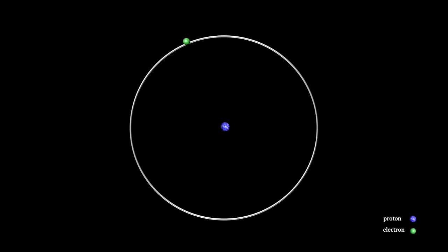The first proposed solution was to assume that the electron is in orbit around the nucleus, like the Earth around the Sun.